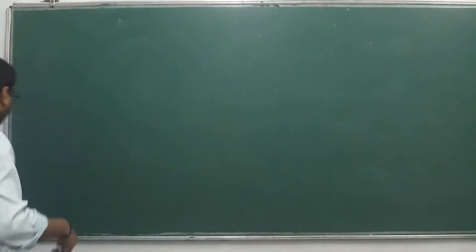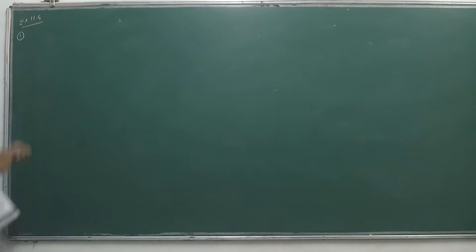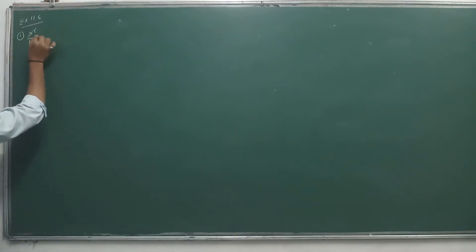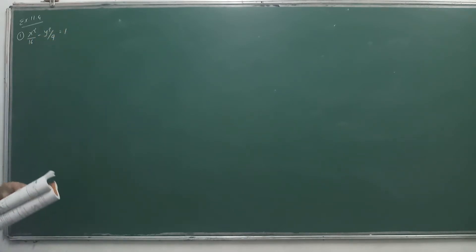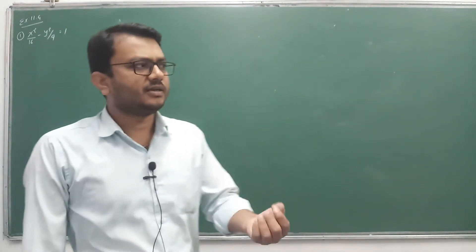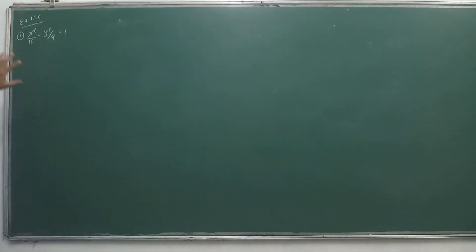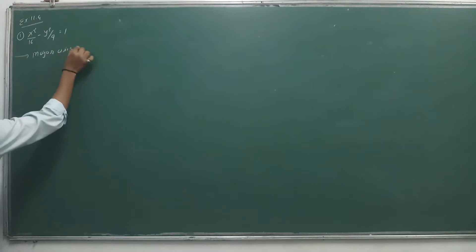Question 1: In each of exercises 1 to 6, find the coordinates of the foci and the vertices, then the eccentricity and the length of the latus rectum of the hyperbola. Question 1 is x²/16 minus y²/9 = 1. Since X comes first, our major axis will be X.